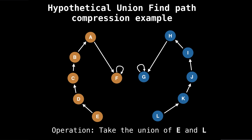Suppose we have this hypothetical union find. I say hypothetical because with path compression, I'm almost certain it's impossible to achieve a structure that looks like this. Nonetheless, it's a good example.